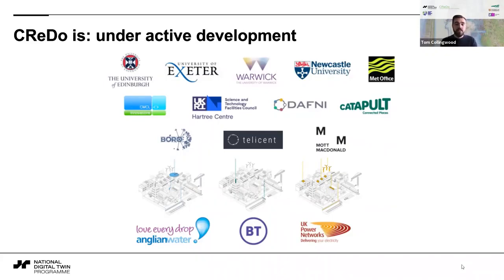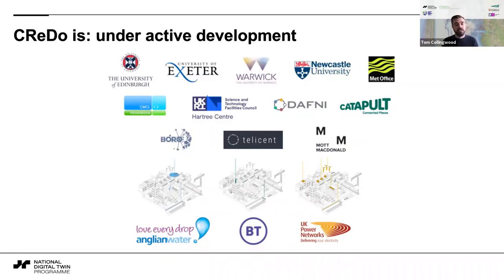The next two levels on the diagram are a platform and infrastructure level. CMCL are providing the dynamic knowledge graph that sits underneath everything we do, representing all of the assets and everything happening to them. The Hartree Centre, where I work, is providing not only myself as technical architect but also research software engineers and data scientists. DAPHNE — the Data and Analytics Facility for National Infrastructure — is the secure environment where we're hosting all the information and doing all the model development and serving. Connected Places Catapult are also putting data science effort in.